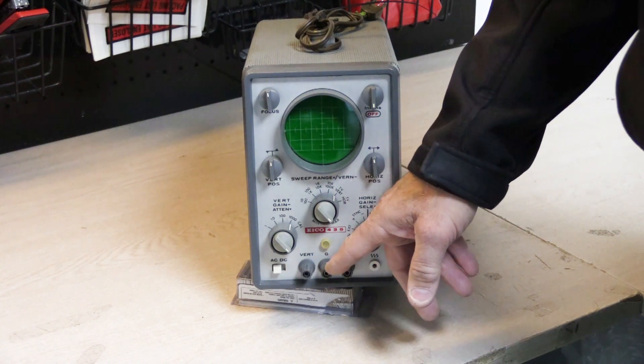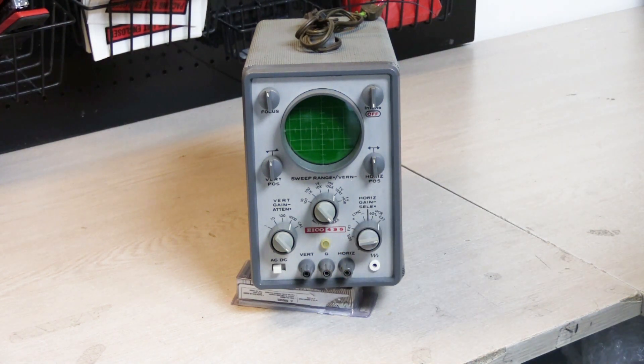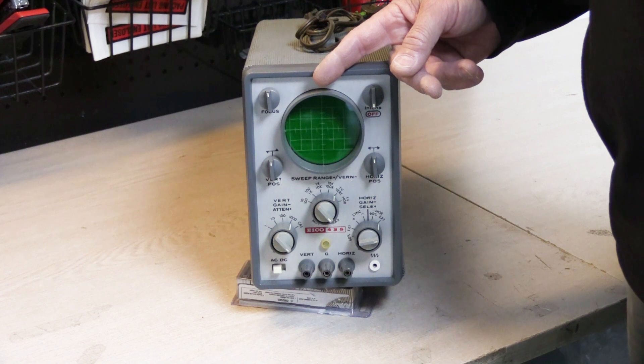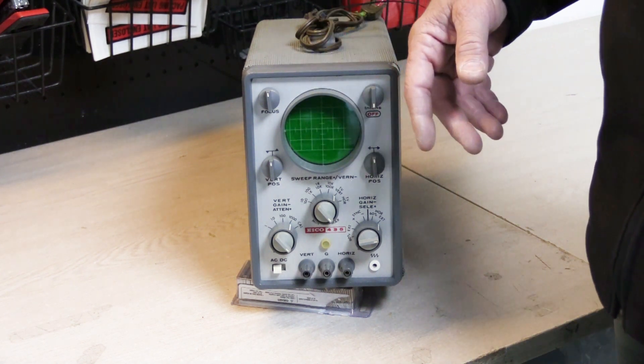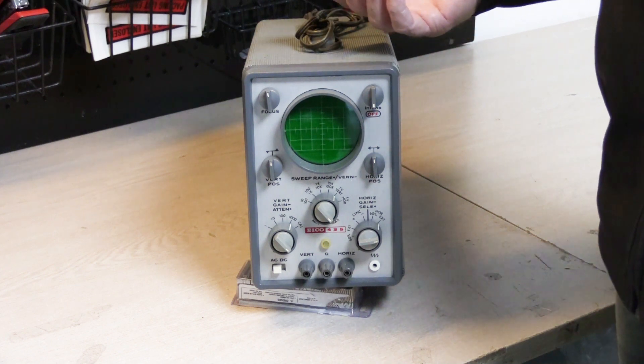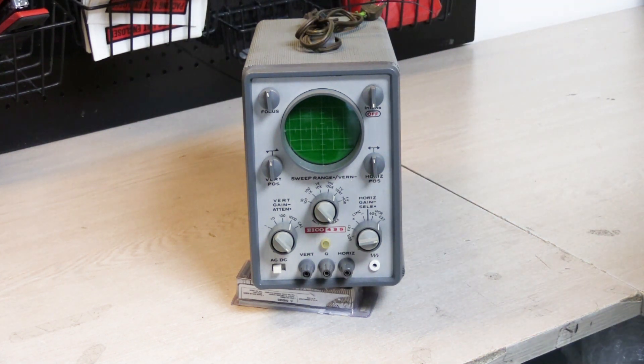Unfortunately it didn't include any probes. So I have to look for probes but they're not too hard to come by. Ico was a pretty good sized manufacturer of electronics. Not only test equipment like the oscilloscope, but they made power supplies and signal generators. They also made things like audio amplifiers and other equipment. So they were a pretty decent sized manufacturer.